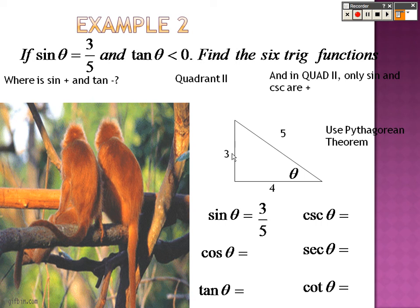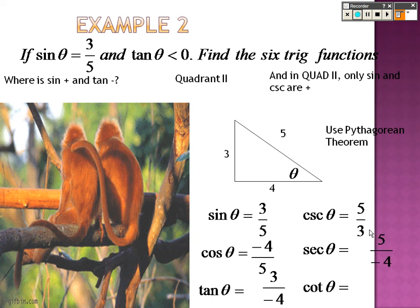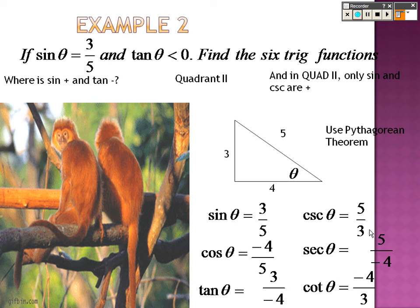We know cosine is adjacent over hypotenuse, which is 4/5. And because the only thing positive in quadrant 2 is sine and cosecant, I put a negative right out in front. And tangent is opposite over adjacent, so that's 3 over 4, and I put a negative there because everything's negative except for those first two. So all you need to do is flip your answers: 5 over negative 4, negative 4 over 3, and there you go.